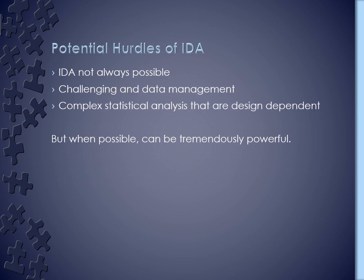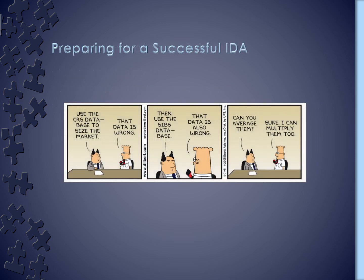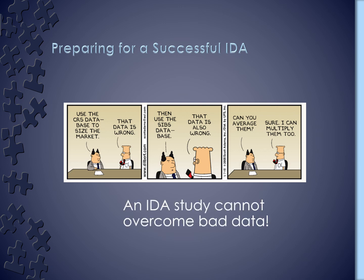But there are also potential hurdles for IDA. In some instances, IDA may not be feasible because there is not enough overlap in some of the constructs across data sets. One of the things that people often find when they get into integrative data analysis is that the data management and how you actually combine the data sets from whatever forms they currently exist in is challenging and takes time. Another thing is that the ability to account for study differences to test hypotheses can result in more complex statistical analyses. But when it's possible, we think it can be a tremendously powerful tool. IDA also can't overcome bad data — whenever we're combining samples, we're hoping that you're combining samples that are each strong in their own way.